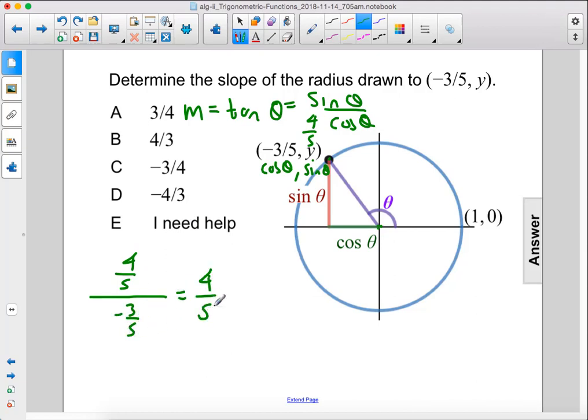So we get that equals 4 over 5 times negative 5 over 3 because we can flip this fraction and multiply it. The 5's cancel and this gives us negative 4 over 3. The answer is D.